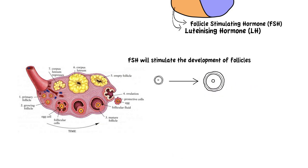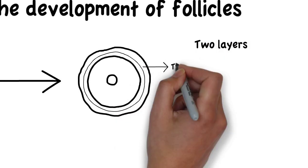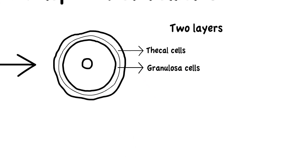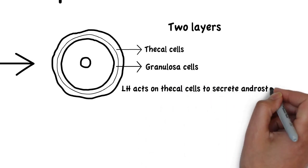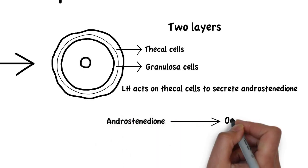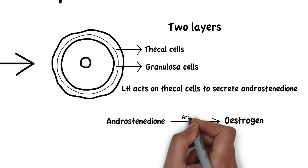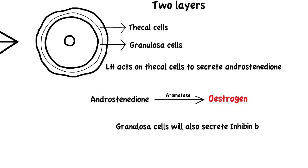If we zoom in here into a follicle, we can see that they are composed of two layers. The outermost layer consists of theca cells, while the innermost layer consists of granulosa cells. While the follicles mature, luteinizing hormone acts on the theca cells to secrete androstenedione. Androstenedione is taken up by granulosa cells and is converted to estrogen by the enzyme CYP19A1, also known as aromatase. Granulosa cells also secrete inhibin-B. Therefore, as the follicles mature, they start to produce estrogen and inhibin-B.